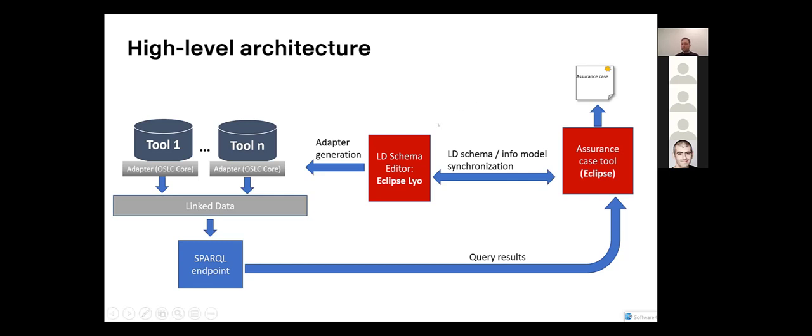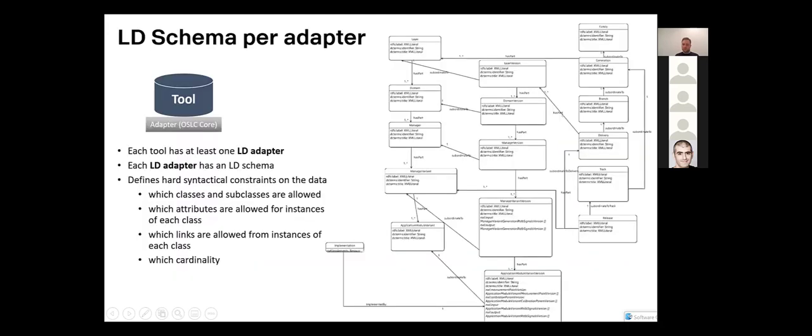But in essence, the assurance case tool then you can say in the end, okay, please verify my assurance case claims, which will be translated into, okay, get me the relevant information from the linked data layer and verify that all of these properties that must be true for the claims to be true are actually true. So we run some analysis inside of this box here. And then if everything is okay, we produce an assurance case report. If it's not okay, we again produce some sort of a report to indicate what the problem is.